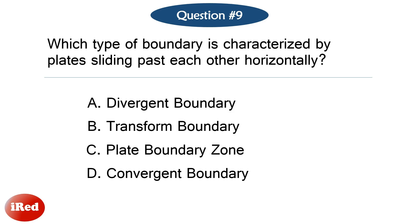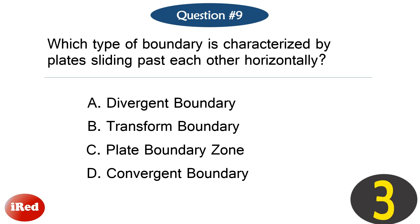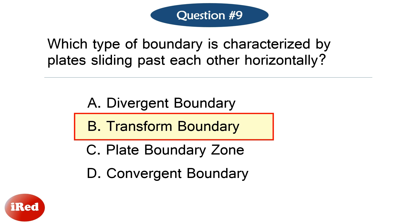Question number nine. Which type of boundary is characterized by plates sliding past each other horizontally? The correct answer is letter B: transform boundary.